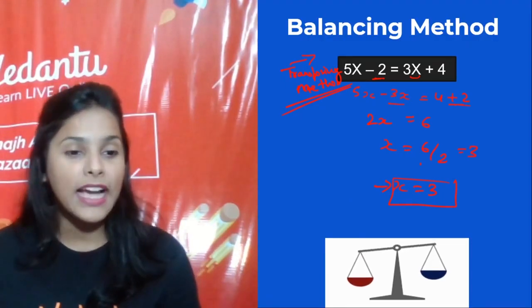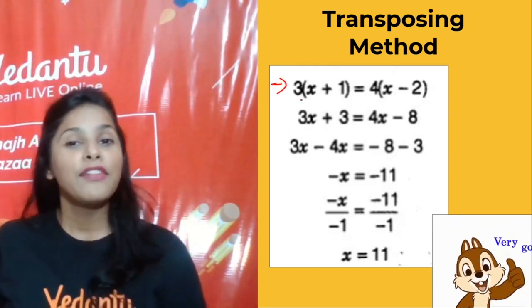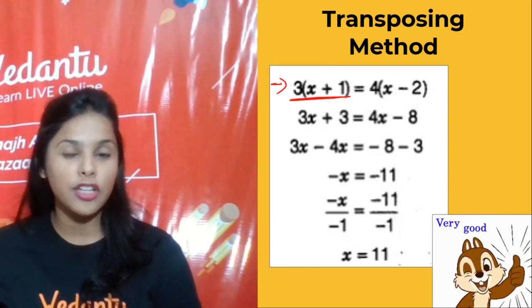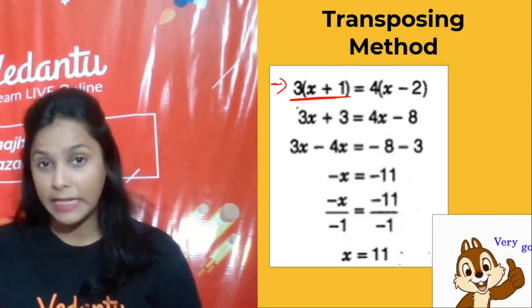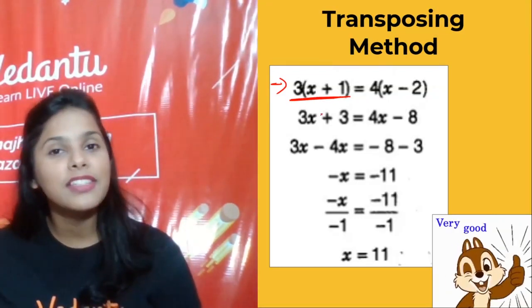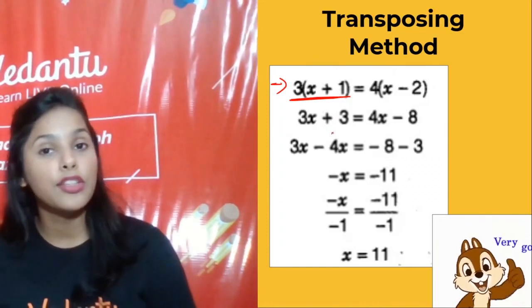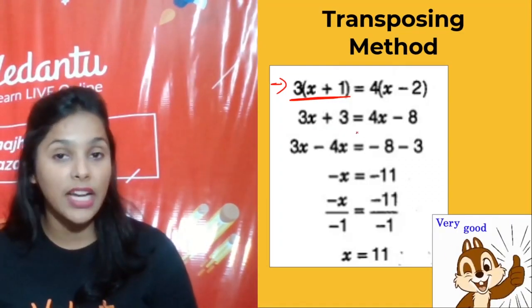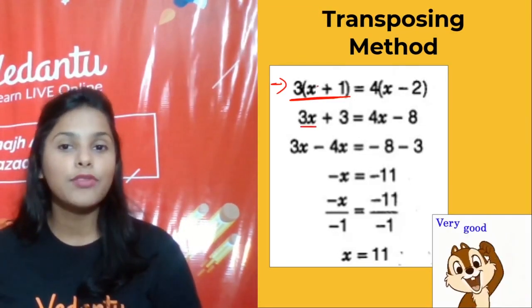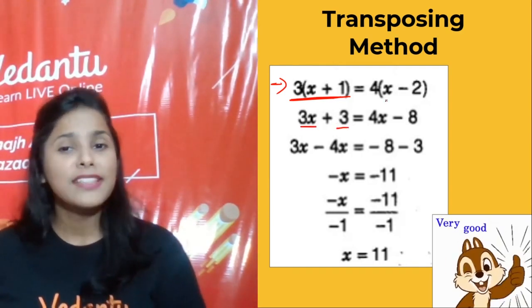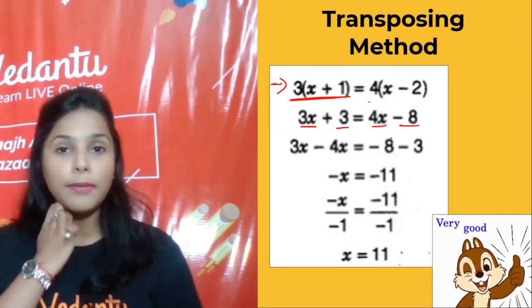Now let us look at another important example. We have to solve 3(x + 1) = 4(x − 2). We simplify using the distributive property. So 3 × x = 3x, 3 × 1 = 3, giving 3x + 3. Similarly, 4 × x = 4x, 4 × (−2) = −8, giving 4x − 8.